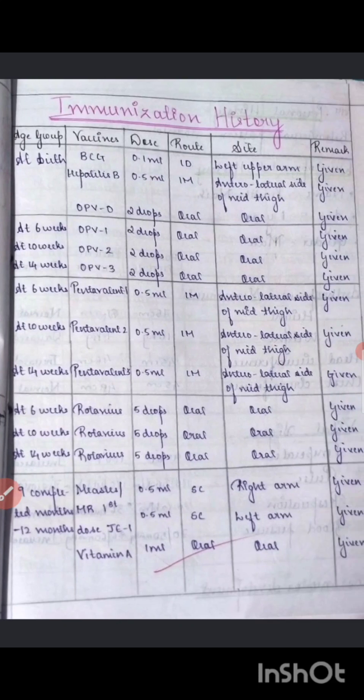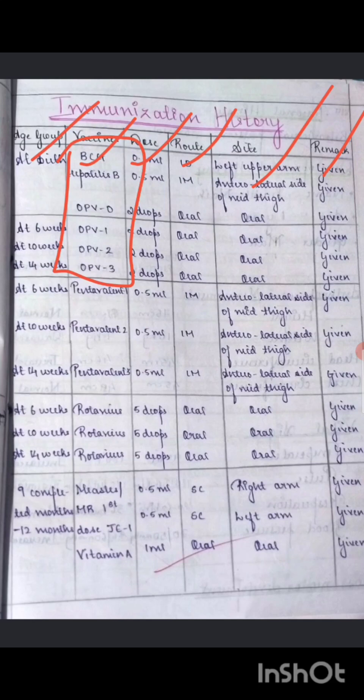Then comes the immunization history. Mention till date what immunizations the child has taken and what has not been taken. If no immunization has been given, mention the reason. You can present this in a table format with age group, vaccine, dose, route, and site, or simply list what immunizations have been taken.